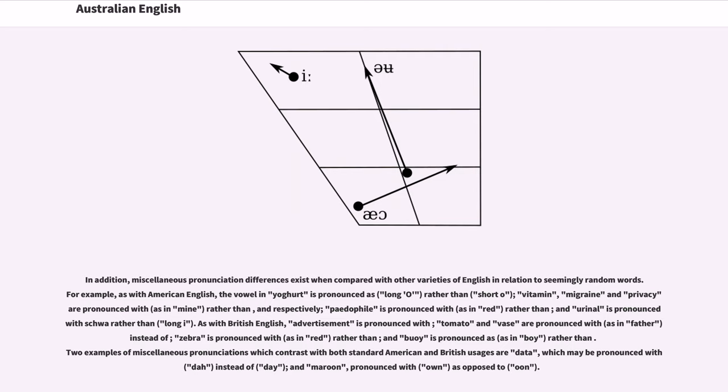As with British English, advertisement is pronounced with /ˈæd/, tomato and vase are pronounced with /ɑː/ as in father instead of /eɪ/, zebra is pronounced with /ɛ/ as in red, rather than /iː/, and buoy is pronounced as /ɔɪ/ as in boy, rather than /uː/.